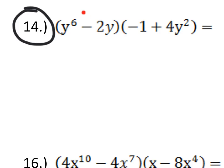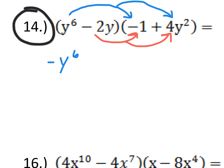Let's do it one more time, but we'll do it with FOIL instead of the area model. So, the idea of FOIL is that we have to multiply every term in our first binomial by every term in our second binomial. So, I have to multiply y to the 6th by negative 1 and by 4y squared. And I also have to multiply negative 2y by negative 1 and by 4y squared.